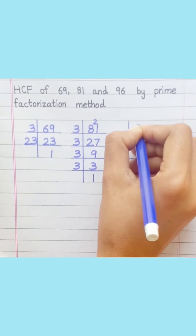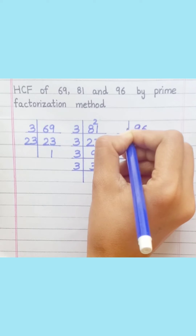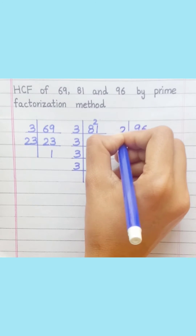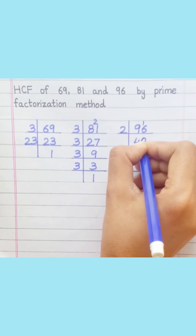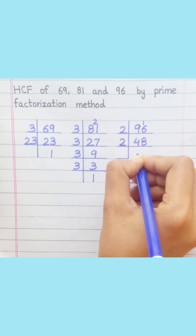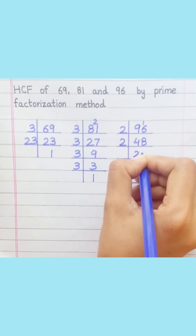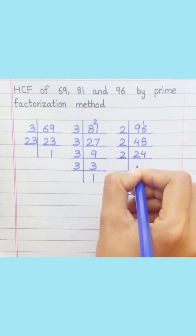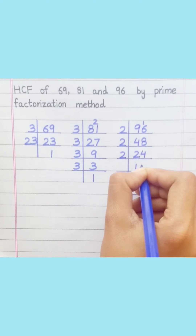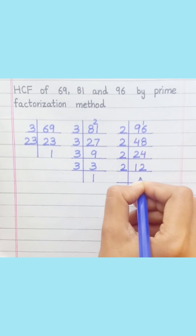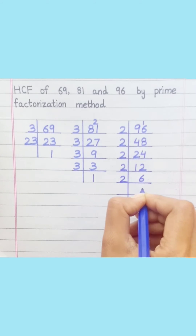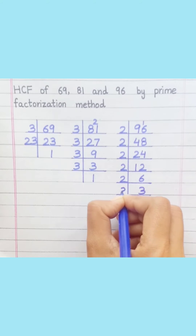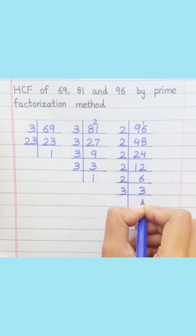96: 2 fours are 8, 2 eights are 16, 2 twos are 4, 2 fours are 8, 2 ones are 2, 2 twos are 4, 2 sixes are 12, 2 threes are 6, 3 ones are 3. So 96 equals 2 multiplied by 2 multiplied by 2 multiplied by 2 multiplied by 2 multiplied by 3.